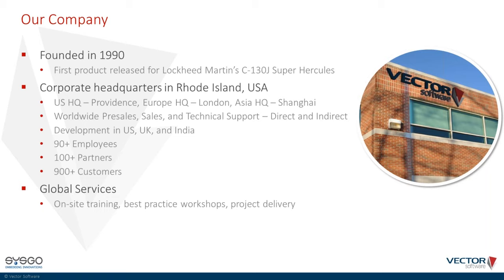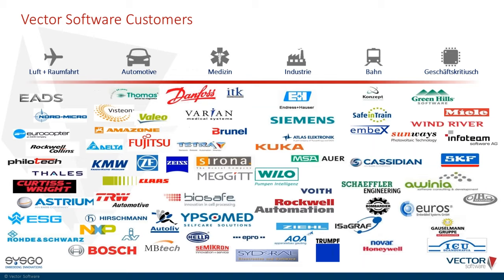Our headquarters are located in East Greenwich, Rhode Island, between Boston and New York on the east coast of the US. My colleague and I sit in Germany in the city of Kempen, close to Düsseldorf. We have a global network of subsidiaries and distributors. We have customers in nearly all industries. Previously our customers came primarily from aerospace, rail, and defense. The highest growth rates today are in the automotive, medical, and industrial automation industry, driven by different functional safety standards.